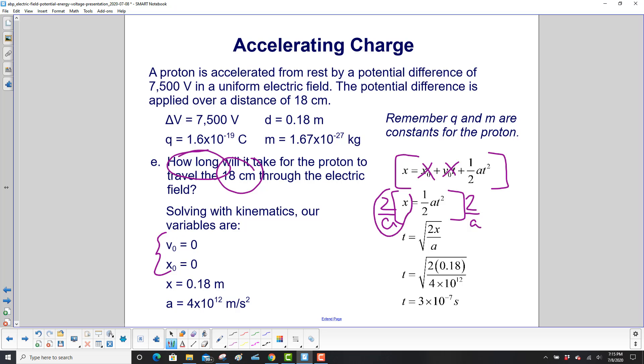2 over a. So that'll give us here 2x over a, and here the 2 will cancel, the a will cancel. And we have t squared is 2x over a. Take the square root of both sides. t is the square root of 2x over a. Plug in our numbers.